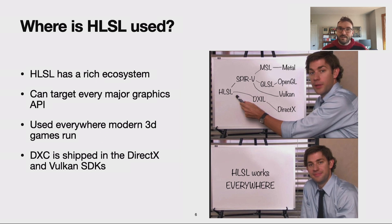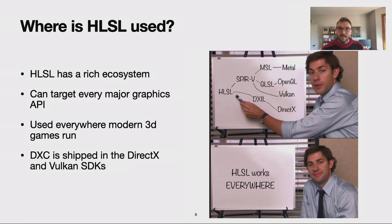HLSL has a huge ecosystem of tools. It can be used to target every major graphics API and is used more or less everywhere that modern 3D games run. DXC, the current reference HLSL compiler, is shipped with the DirectX and Vulkan SDKs, also available on GitHub, and is open source as a fork of Clang 3.7.